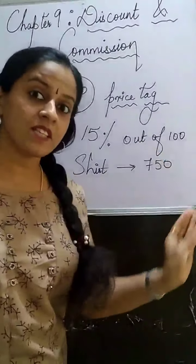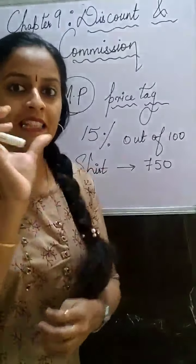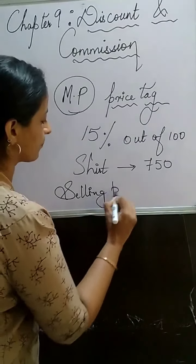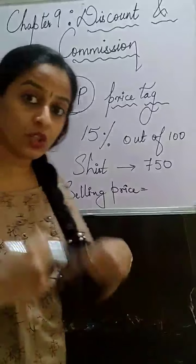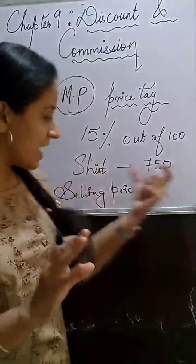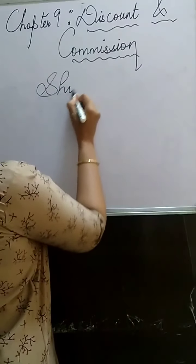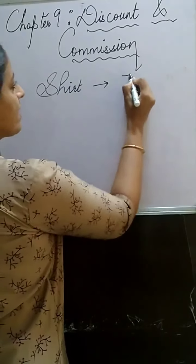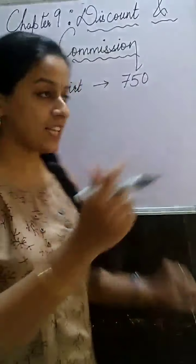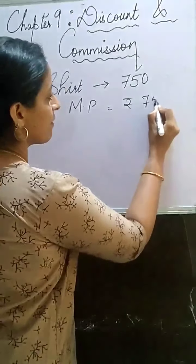After applying the 15% discount, how much money you paid to the shopkeeper is called the selling price or SP. The price that is deducted from your card is also the selling price. For example, let the price of a shirt be ₹750 — this is the marked price, so marked price equals ₹750.